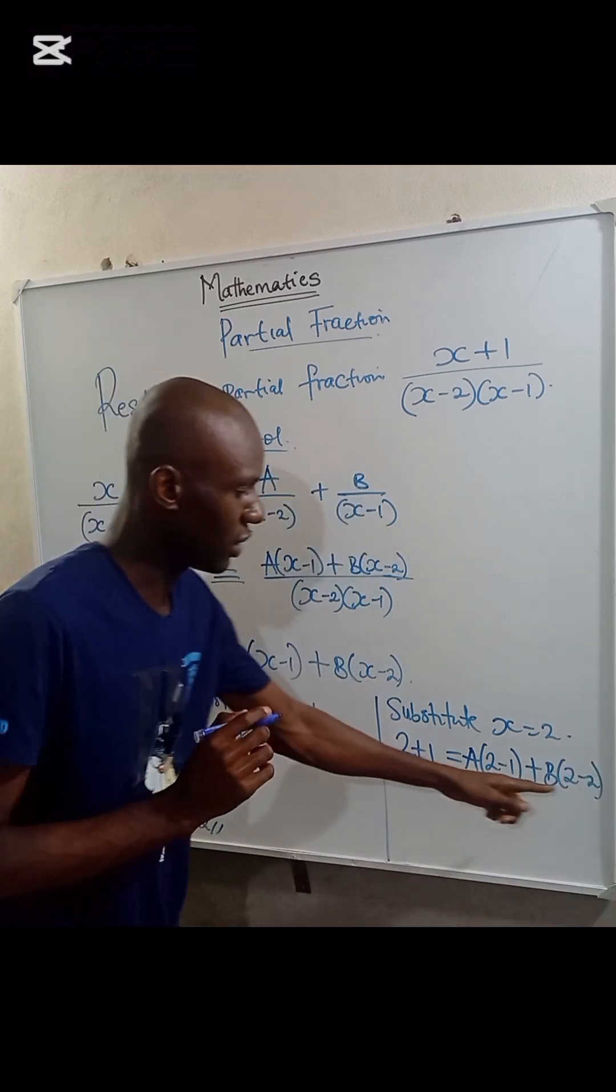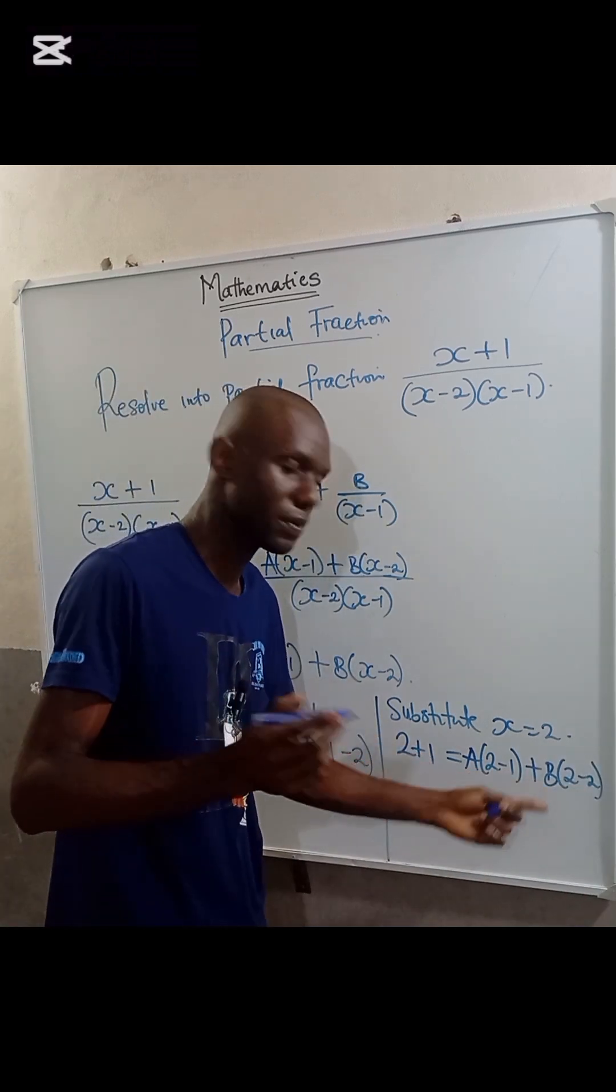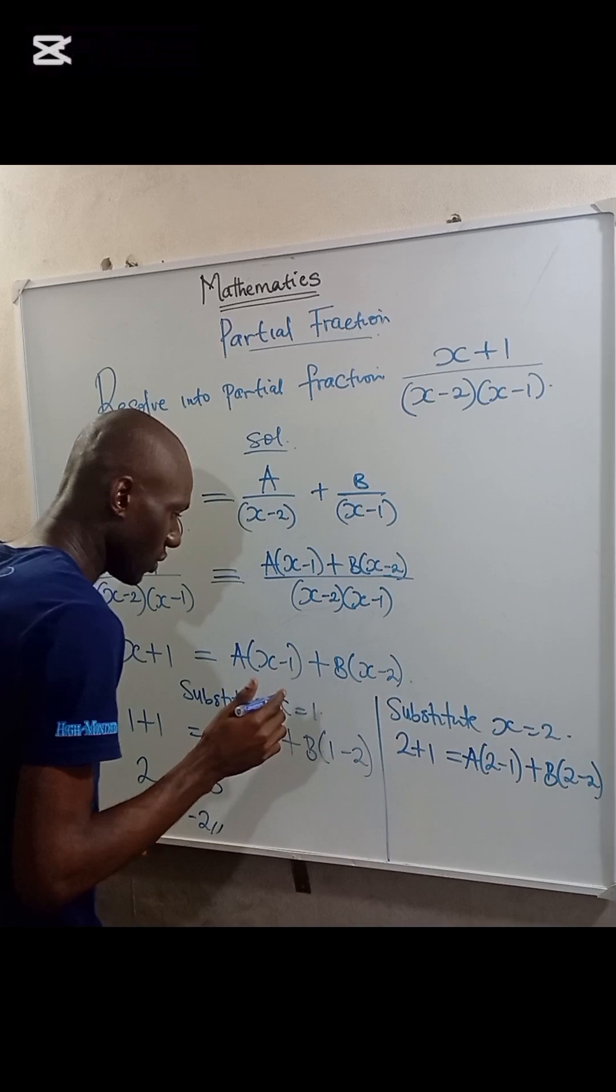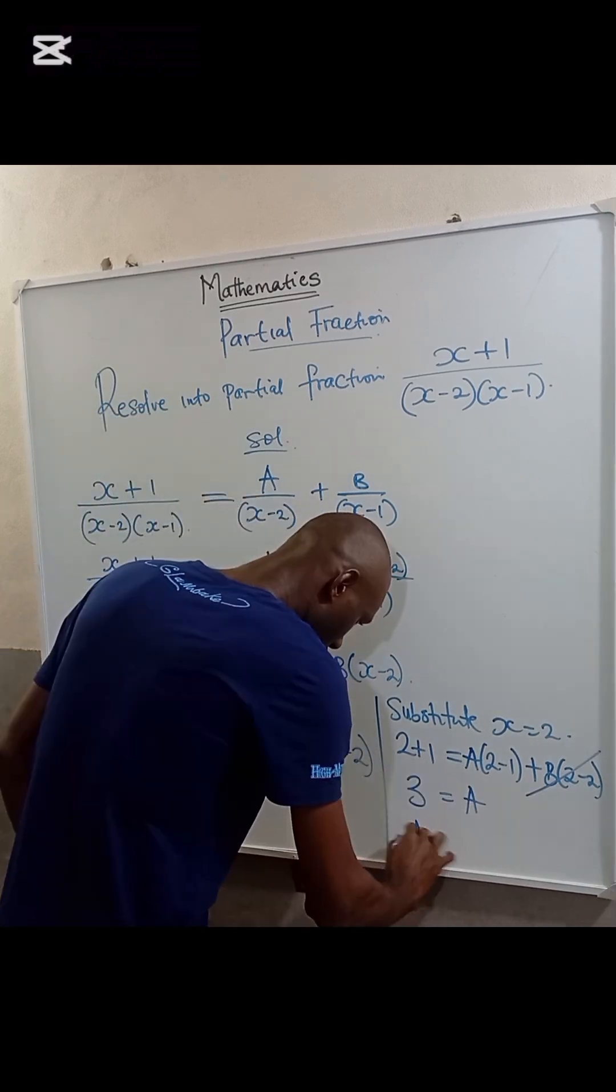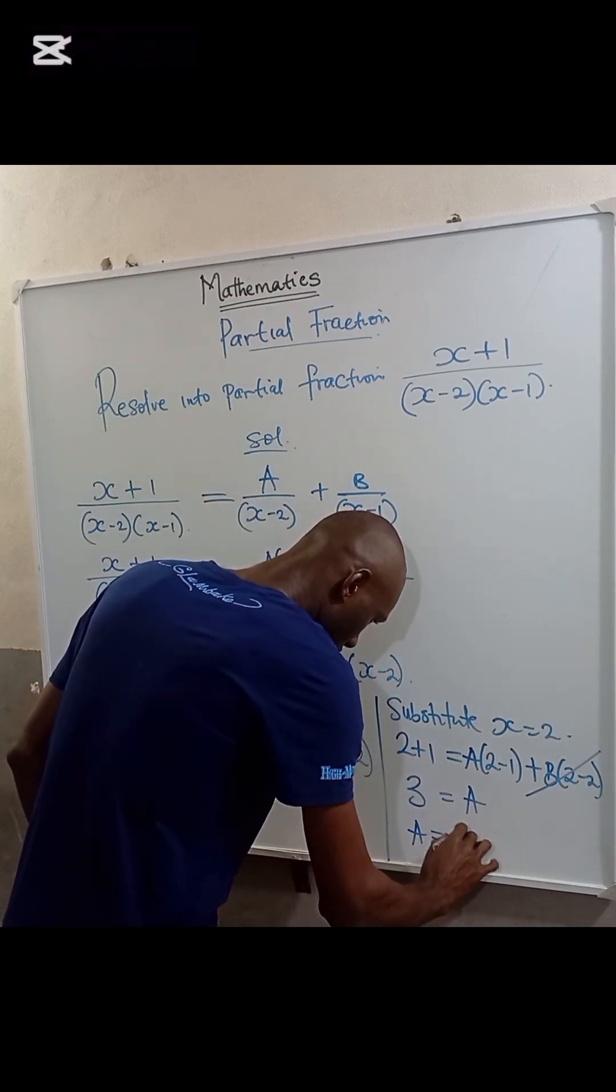2 minus 2 is 0. 0 times B, B will go out. Therefore, this will be 3 equals A times 1, so A is equal to 3.